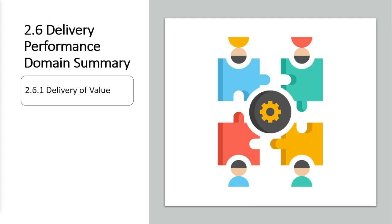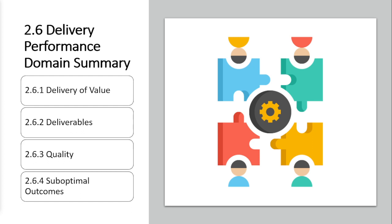The sixth domain is the delivery performance domain. It first talks about delivery of value. Value is the net quantifiable benefits that the customer derives from a deliverable — this is well covered in the 6th edition. Delivery of value is important through deliverables, and quality also comes into play. Not every project ends the way we expect; we call these sub-optimal outcomes. The key question is how do we handle them — positively, we use them as a vehicle to learn lessons and get better.